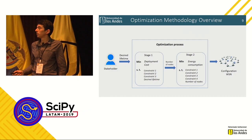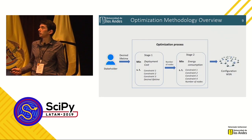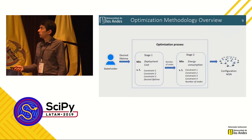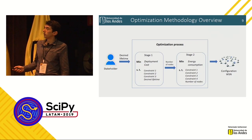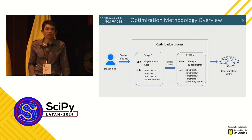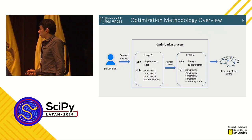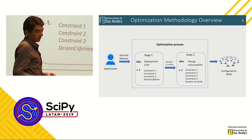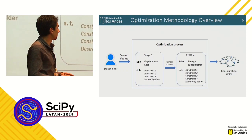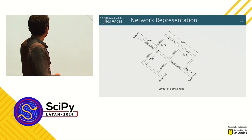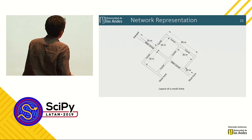In stage one, the desired lifetime is a constraint and the objective is to minimize the deployment cost — that is, minimize the number of sensors deployed. The output of the first stage is the number of nodes needed to meet the desired lifetime. In the second stage, the number of nodes is a constraint and the objective is to minimize energy consumption or maximize the lifetime of the wireless sensor network. The final output is the configuration: number of nodes, location of each node, and how nodes communicate.